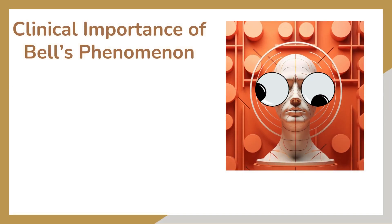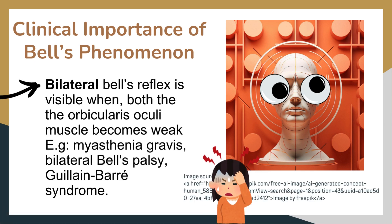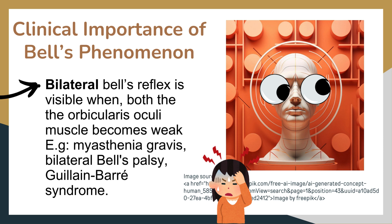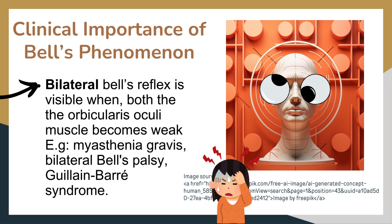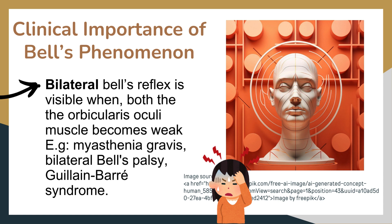Bilateral Bell's reflex is visible when both orbicularis oculi muscles become weak, for example in myasthenia gravis, bilateral Bell's palsy, or Guillain-Barré syndrome.